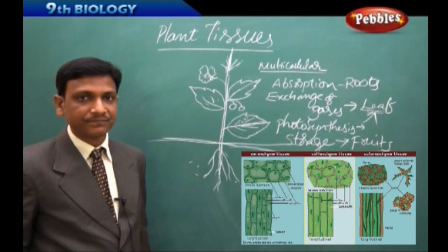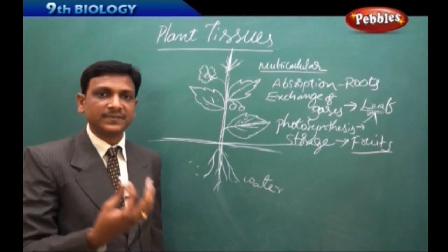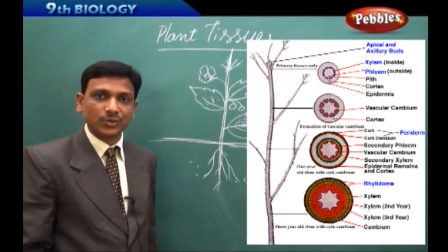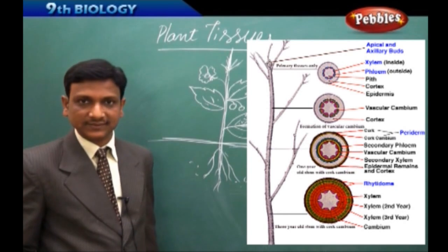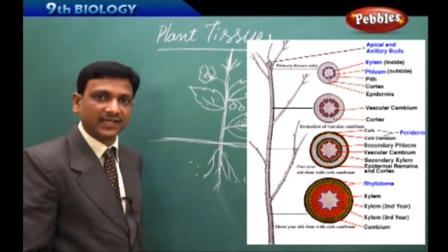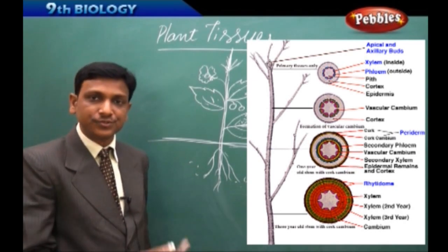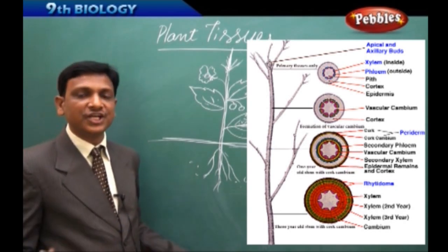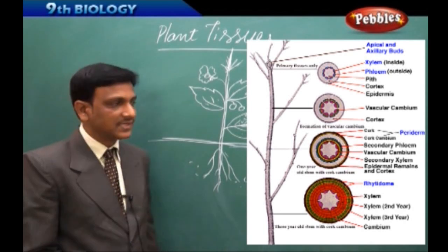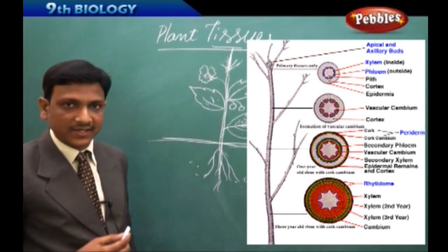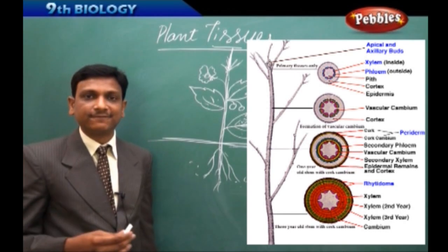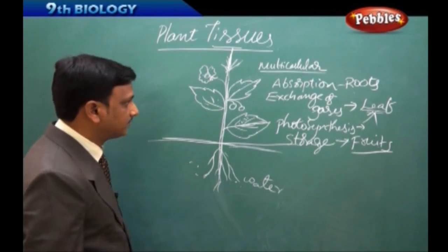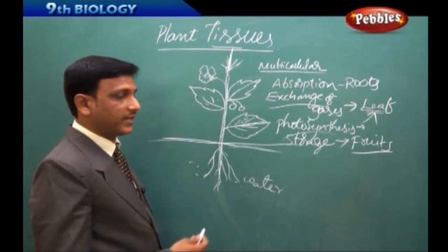Different parts of a multicellular organism are made up of different kinds of tissues because a specific tissue can perform a specific function. The tissue present in the leaf has to perform photosynthesis and exchange of gases, so it is designed accordingly — the cells are arranged in a specific manner and contain the required pigments or minerals. That is why there is a variation of tissues in plants. In this lesson we will study the different types of tissues found in plants, their structure, and their functions.